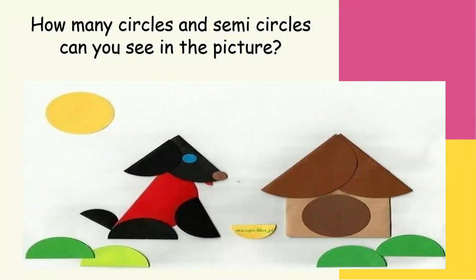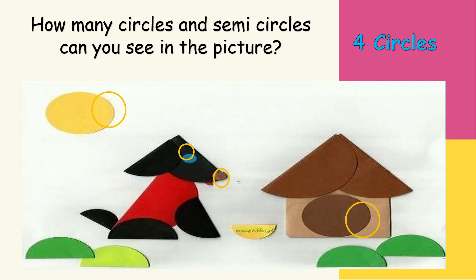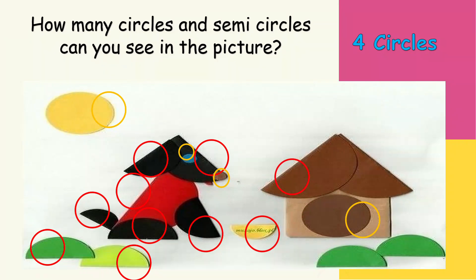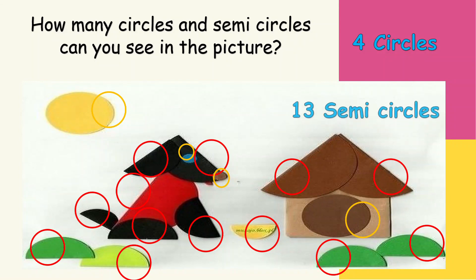Can you help me? How many circles and semicircles can you see in the picture? Let's find out how many circles first: one, two, three, and four. There are four circles. Now, what about the semicircles? Let's count: one, two, three, four, five, six, seven, eight, nine, ten, eleven, twelve — and thirteen. There are thirteen semicircles.